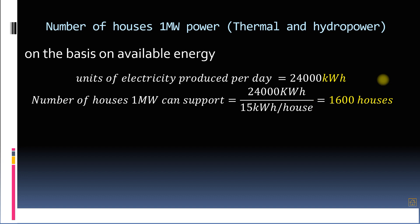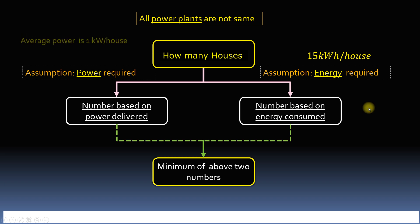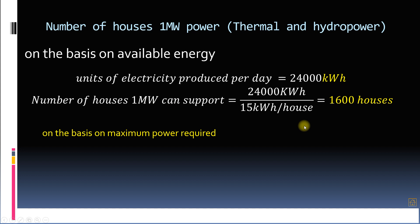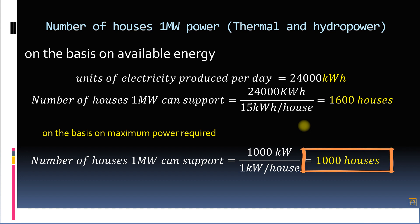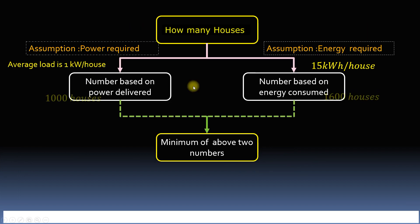Now let's calculate number of houses based on power. We have assumed that on the average maximum power of 1 kilowatt is required by each house simultaneously. Therefore, the number of houses that can be supported will be equal to 1000 kilowatt divided by 1 kilowatt per house equal to 1000. So we can say that the least of two numbers, that is 1000 houses, can be supported by 1 megawatt power plant.